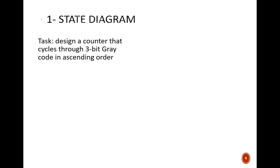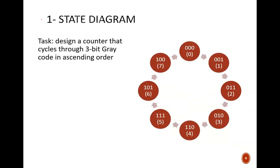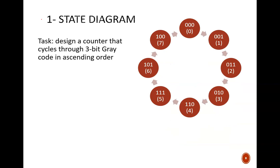The task we are given is to design a counter that cycles through 3-bit gray code in ascending order. The first step is to draw the state diagram. Not having gray code memorized, I looked up the 3-bit codes to help me draw this diagram. Note that I included the decimal representation of the numbers in parentheses. This is not necessary, but it certainly helps our human brains keep organized.